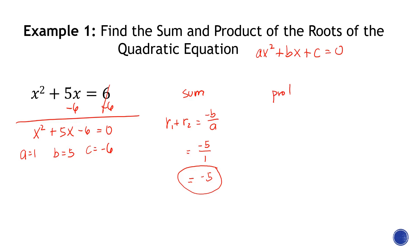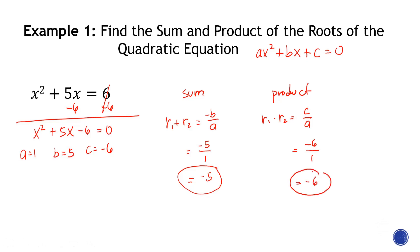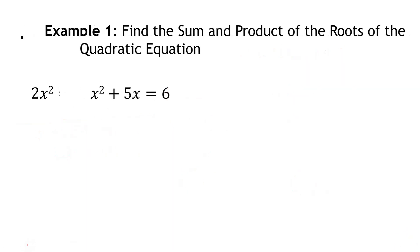For the product of the roots, the formula is c over a. Our c is negative 6 over 1, so the answer is negative 6. Let's have another example.